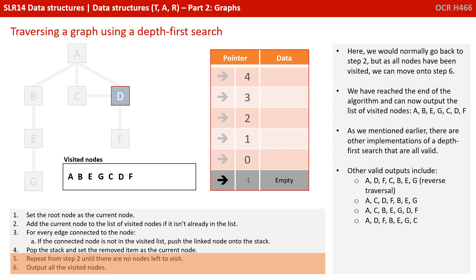We've reached the end of the algorithm, and can now output the list of visited nodes: A, B, E, D, G, C, D, F. As we mentioned earlier, there are other implementations of a depth-first search that are all valid, and other valid outputs from a depth-first search on this graph are shown on the screen now.